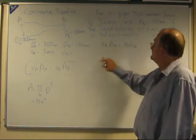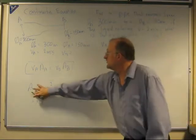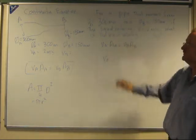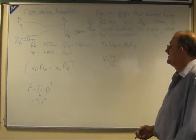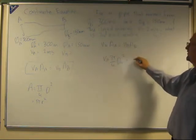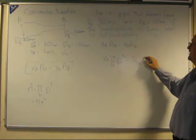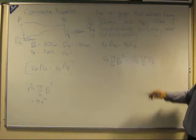So I can now go, velocity at A and substitute this in here, is equal to pi over 4 times diameter at A squared equals velocity at B times pi over 4 times diameter at B squared.